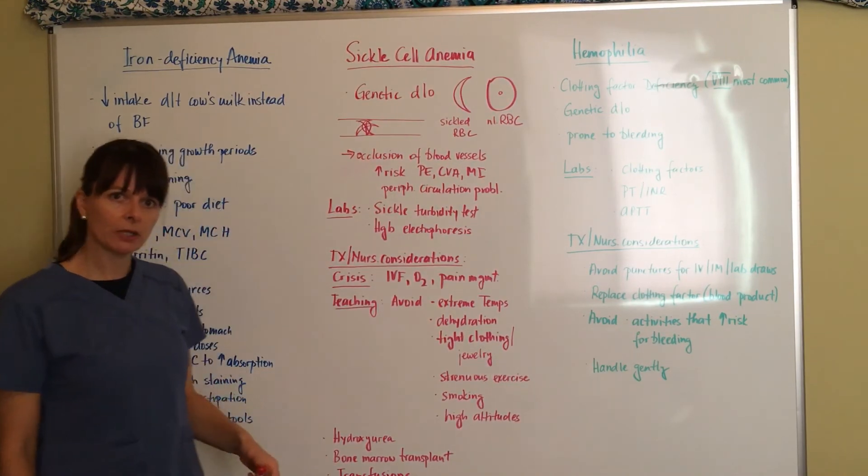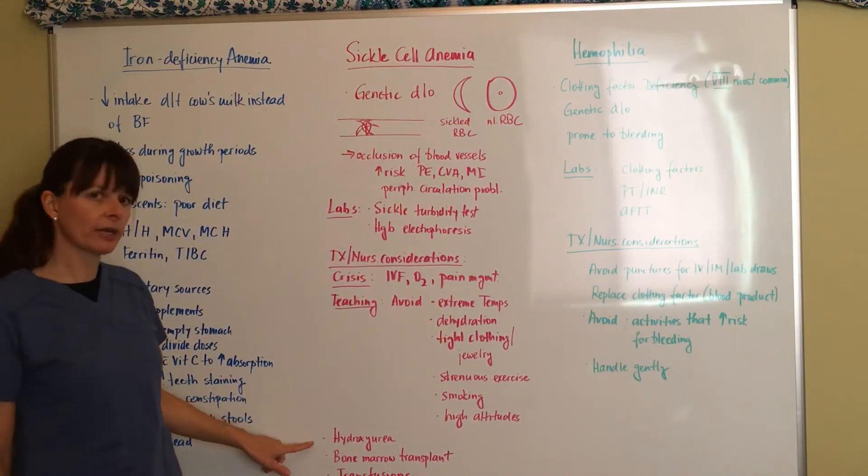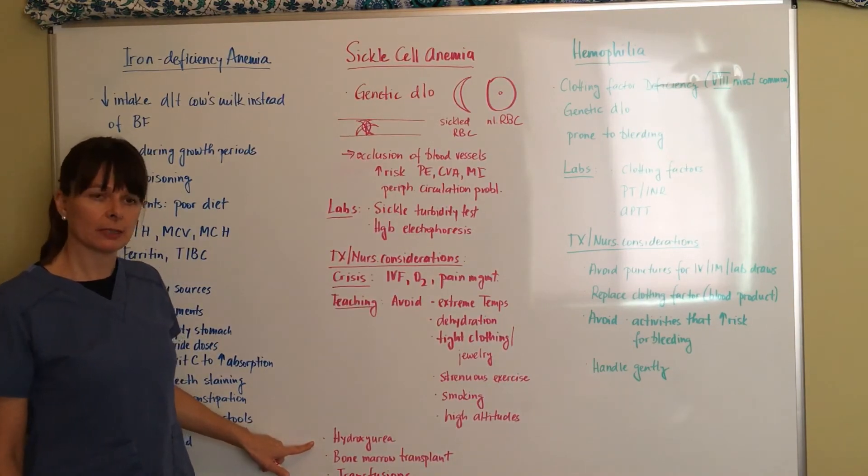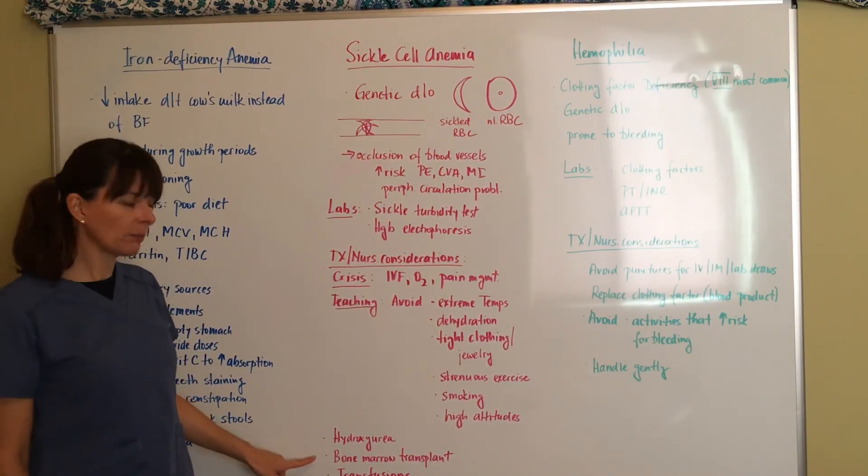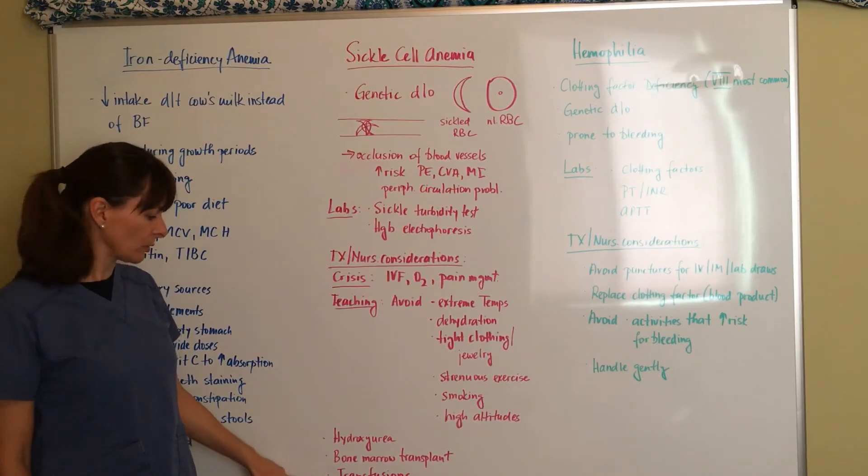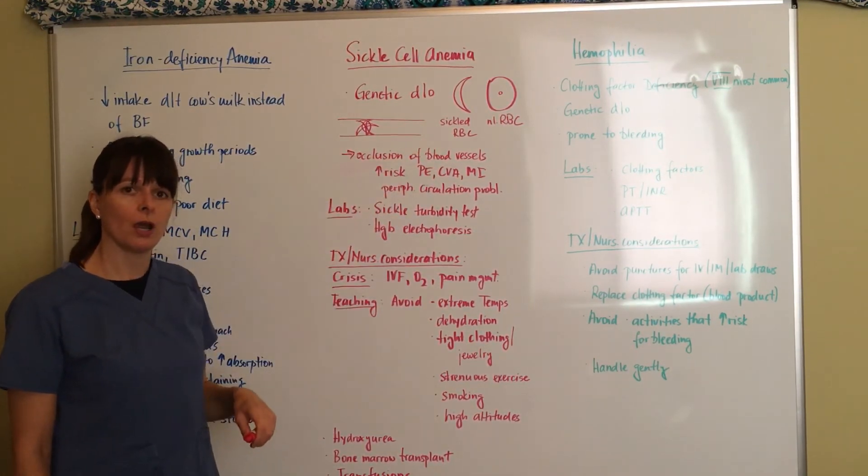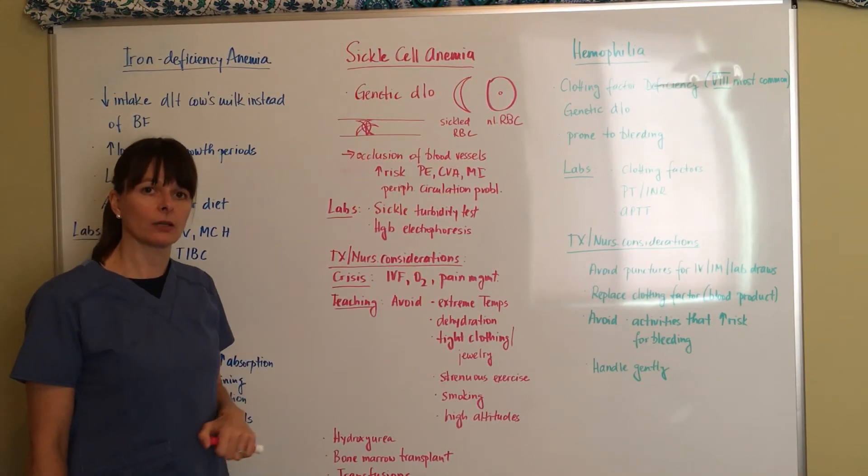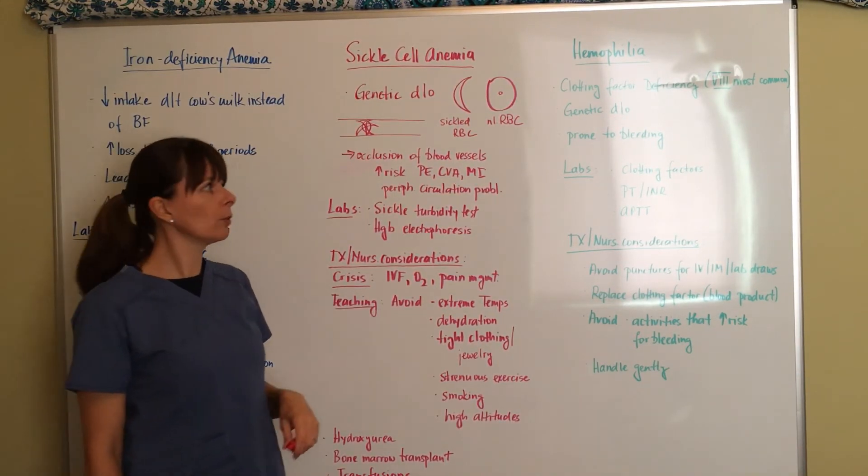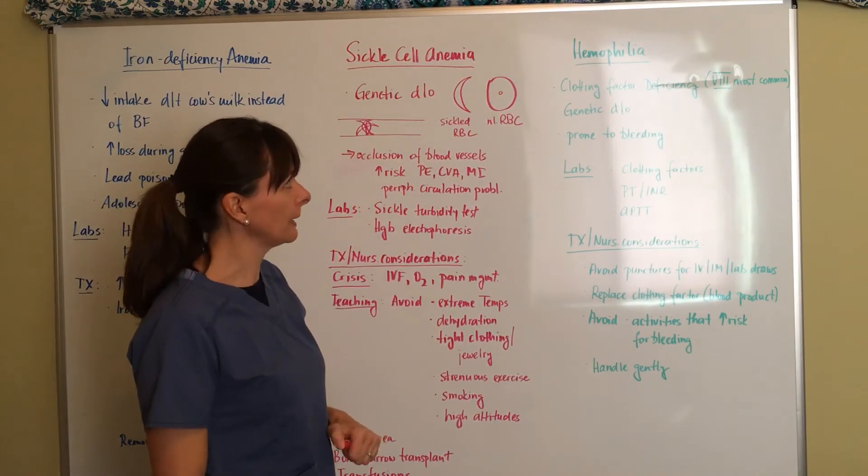As for medical treatment, there is a medication called hydroxyurea that patients sometimes get prescribed. They might need a bone marrow transplant and they might also need transfusions because their lifespan is so much shorter than a regular red blood cell.